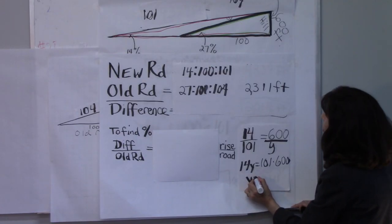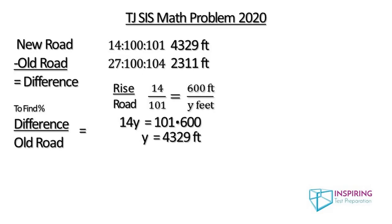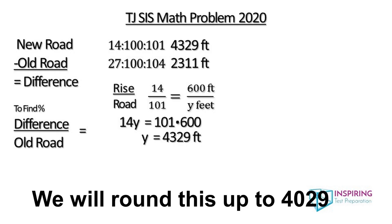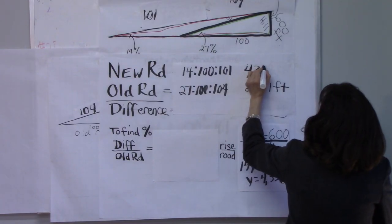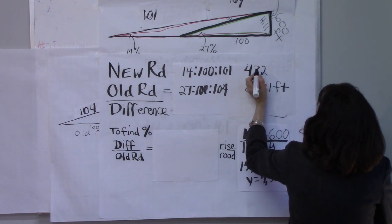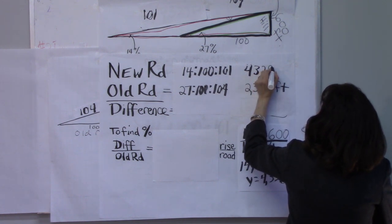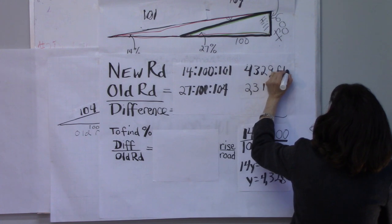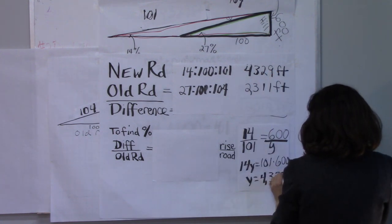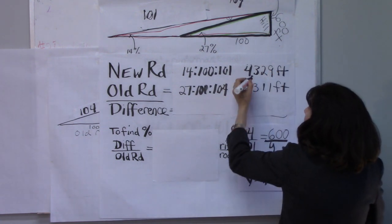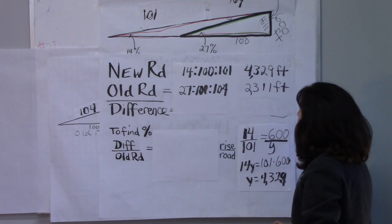And so y will equal 4,328, I believe. Okay, so we can write 4,329, I guess. So, obviously I did these calculations beforehand.